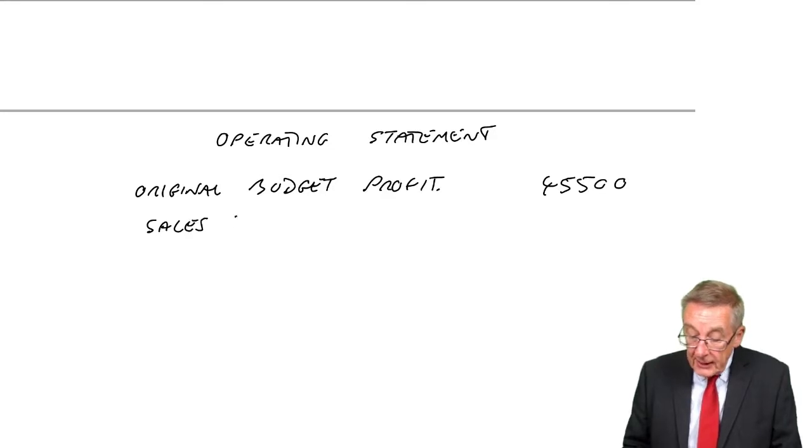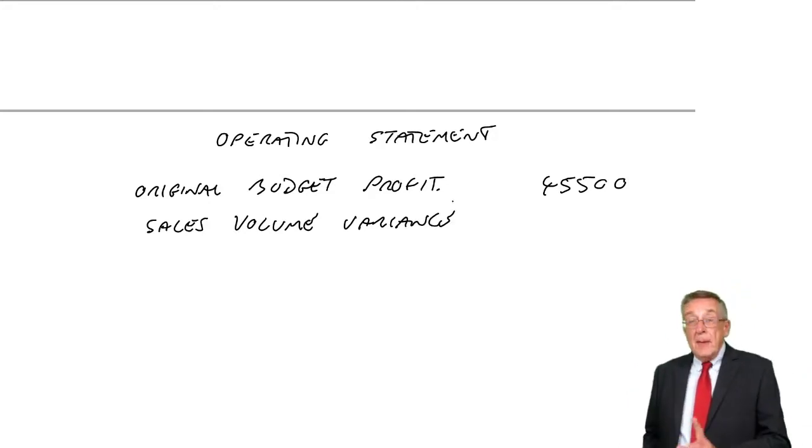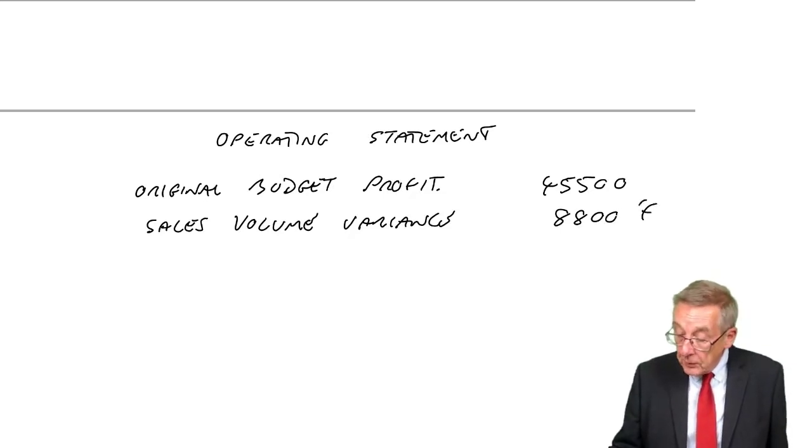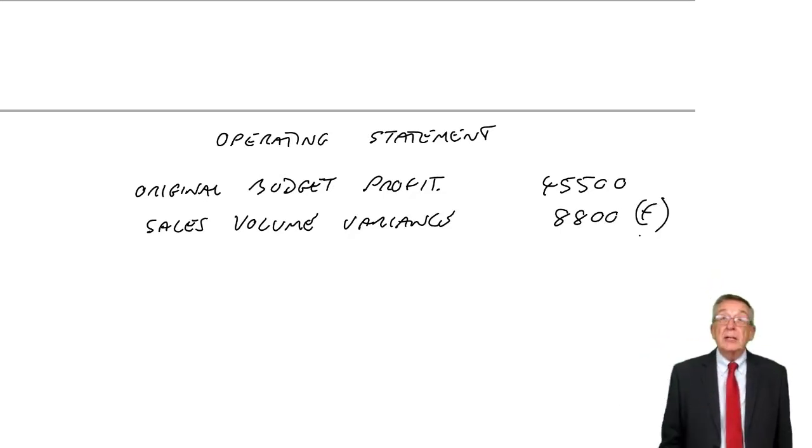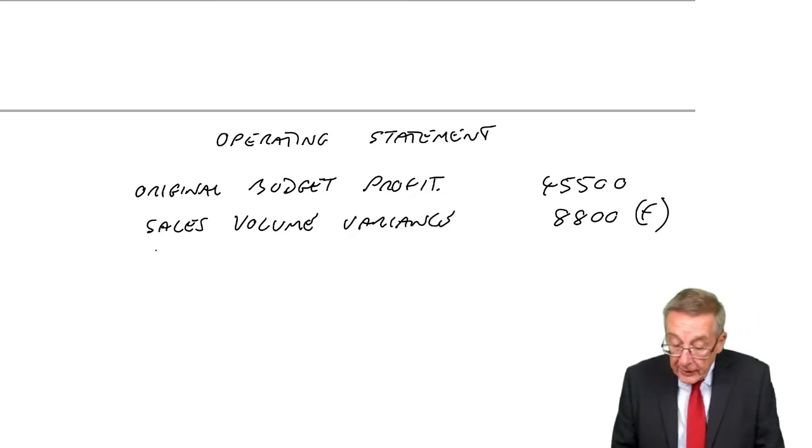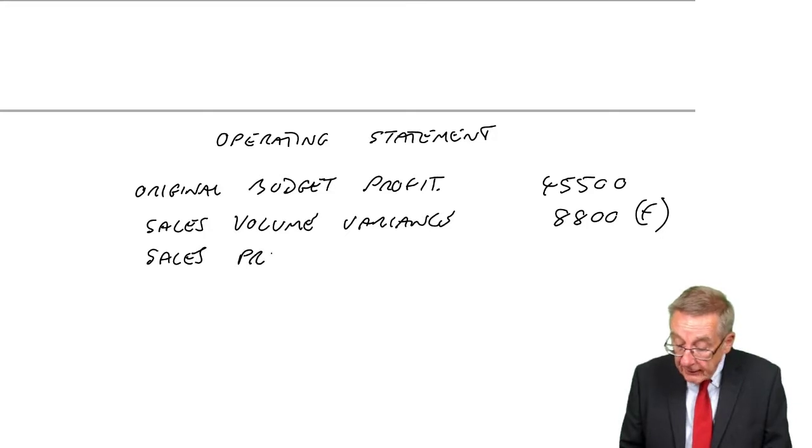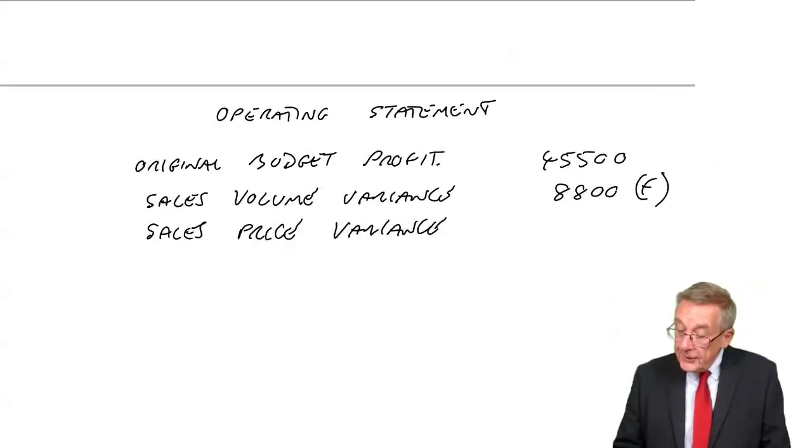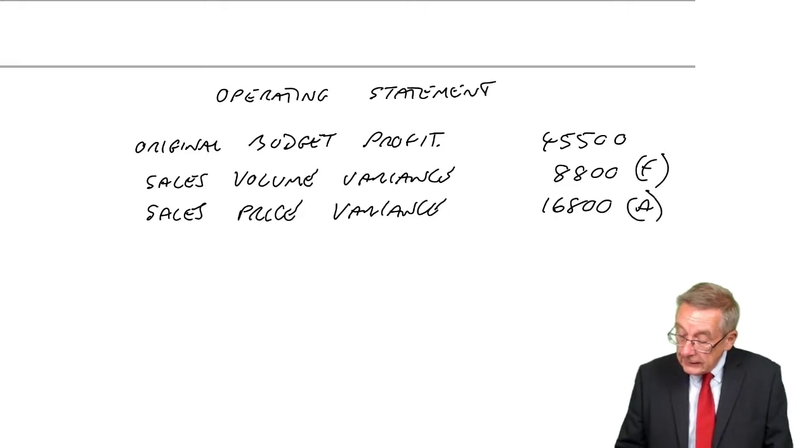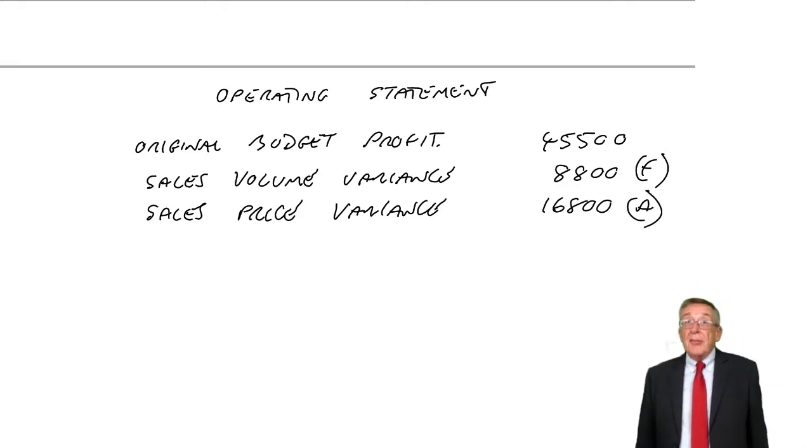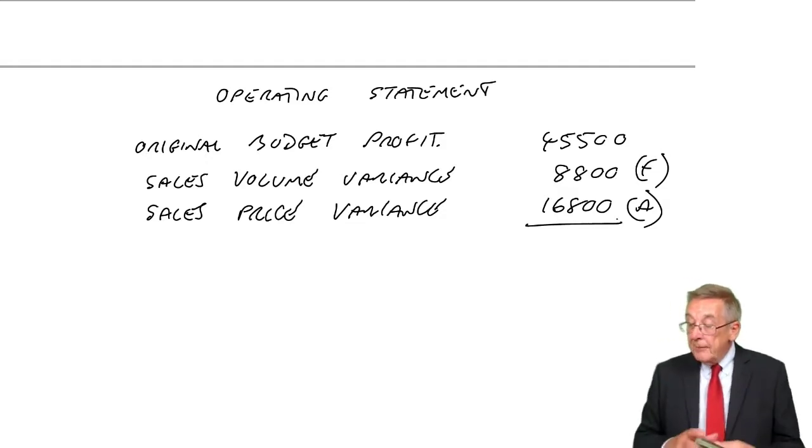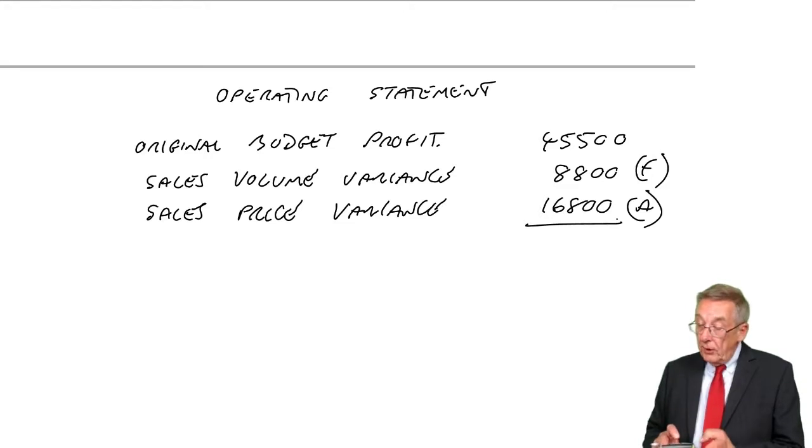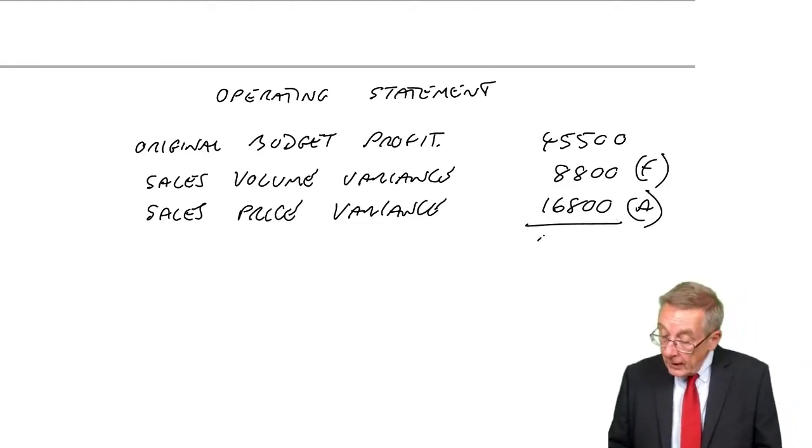And we want to list all the reasons why the profit ended up more or less. And hopefully explain how we get to the actual profit. Well, the first thing, of course, is sales. Let's look at sales. We've just calculated there's a sales volume variance. And I can remember that it was 8,800 favourable. We sold more, that on its own would have given us more profit. However, there's also a sales price variance. Again, I think I can remember it, 6,800, yes. 6,800 adverse. We dropped the price, that would have given us less profit. So at that stage we'd be expecting a profit of 37,500.